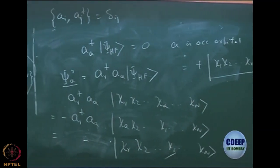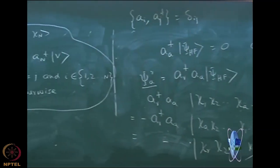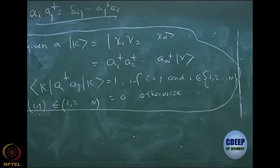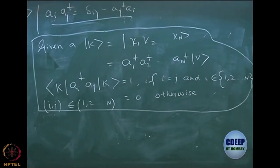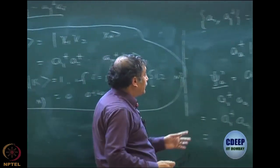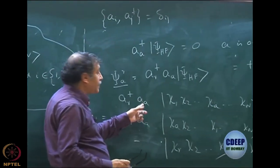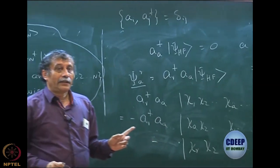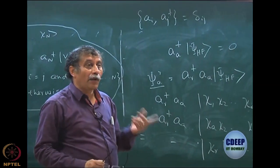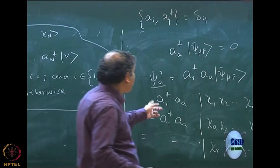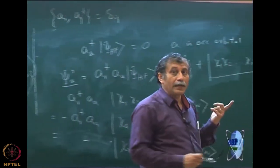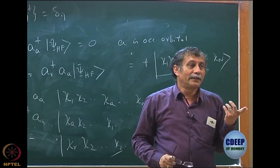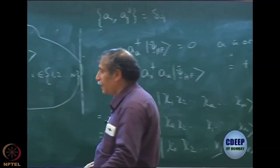Now in the same manner, you can write a doubly excited determinant. It is very important to first annihilate, then create. You might wonder why not the other way, because R is anyway absent in the reference. I might as well have created then annihilated, but let me show you what will happen if you do it the other way.